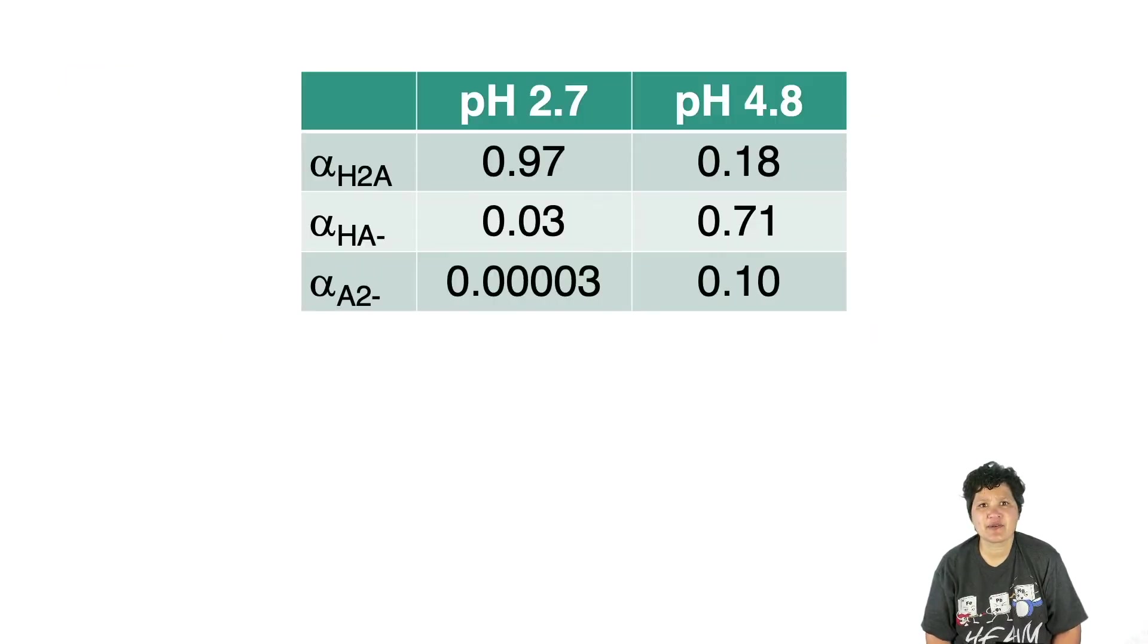If you compare the fractional compositions of the two pHs, you can see that by moving to a more basic pH, you end up with a lot less of the protonated acid form, a lot more of the singly deprotonated conjugate base, and a little bit more of the doubly deprotonated conjugate base. Is there a pH at which you have mostly A2-? Let's do a graph to find out.